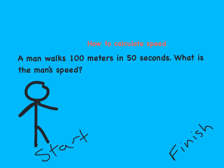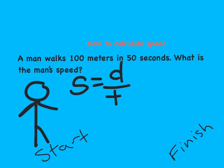First, let's start by setting up our equation. We have speed is equal to distance divided by time. Going back into our problem, our D or distance is going to be 100 meters, and the time it took the man to walk the 100 meters is 50 seconds.